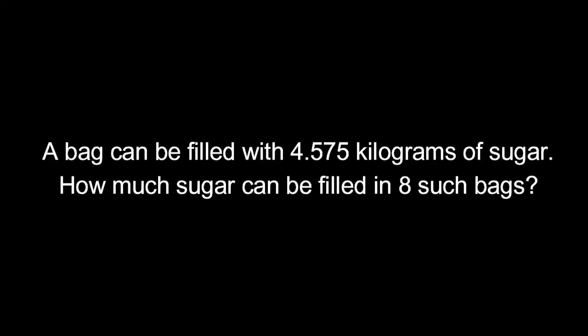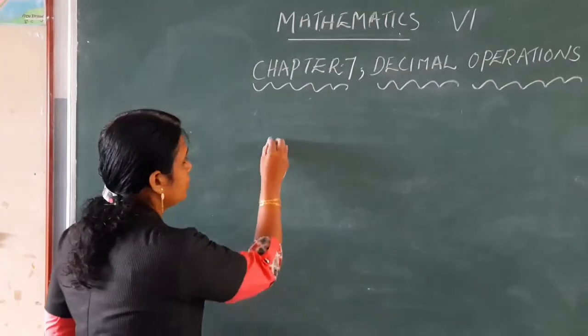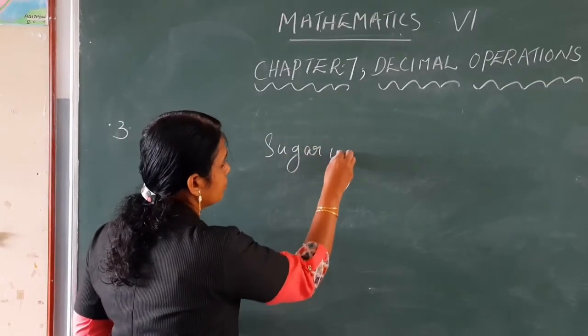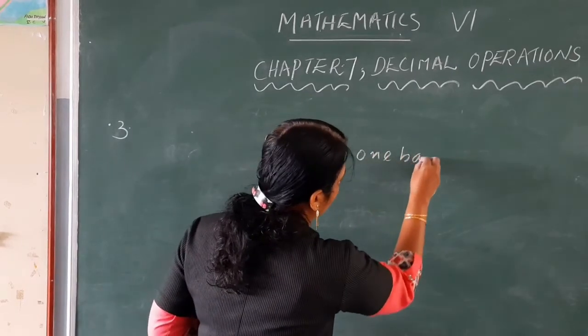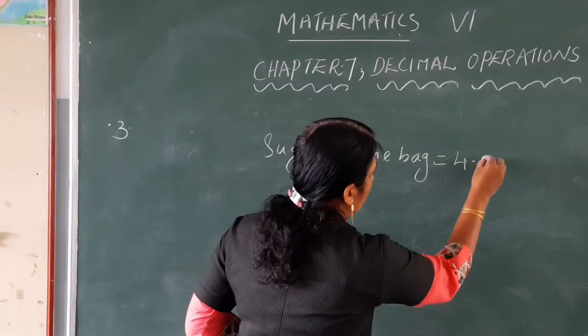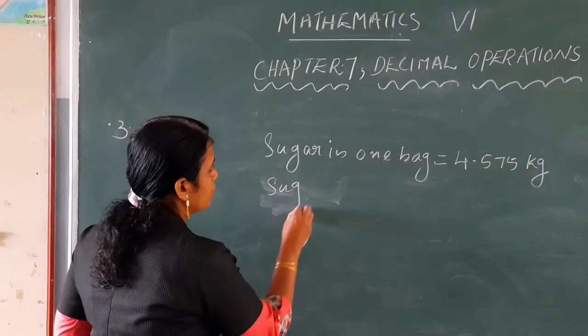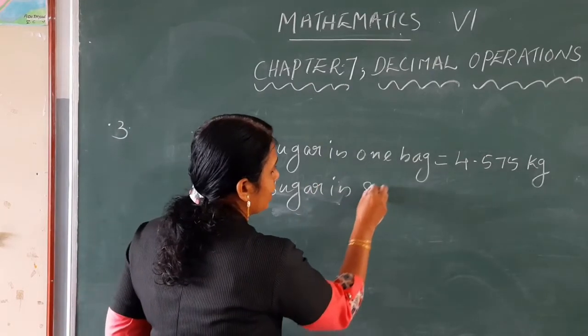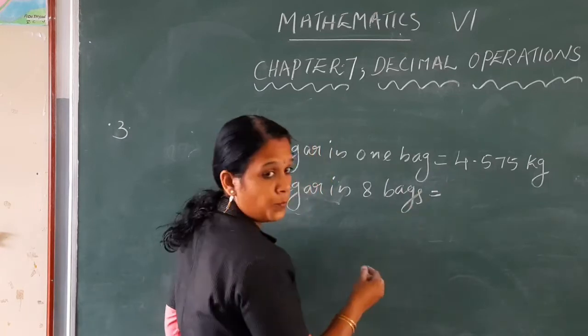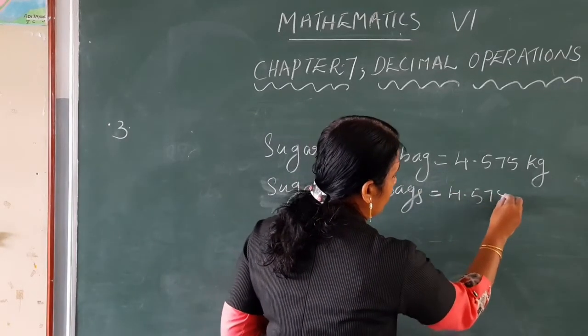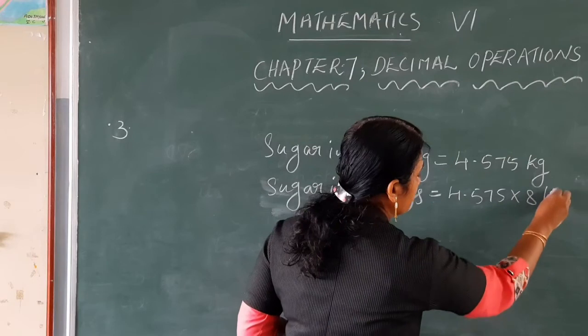Next question: a bag can be filled with 4.575 kilograms of sugar. How much sugar can be filled in 8 such bags? Here, sugar in 1 bag is equal to 4.575 kilograms. Sugar in 8 bags is equal to 4.575 into 8 kilograms.